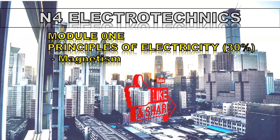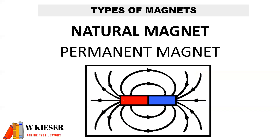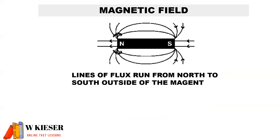For N4 Electrotechniques, in this video we'll be looking at magnetism, and this makes up the module called Principles of Electricity. There are different types of magnets: we get a natural magnet, a permanent magnet, and an electromagnet.